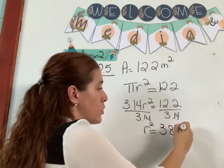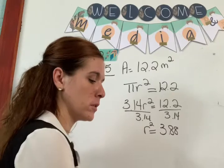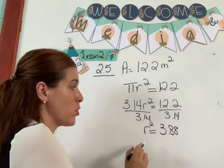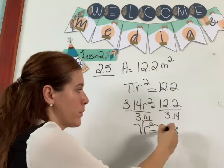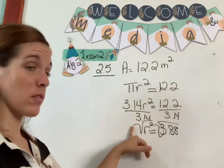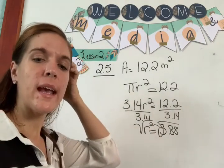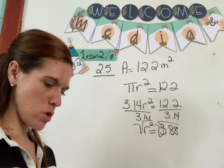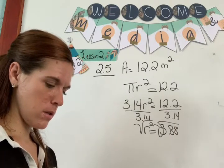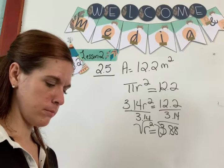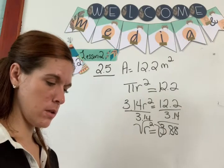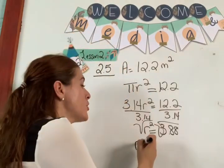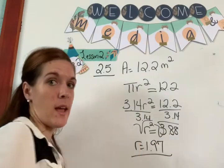So now we have r squared equals 3.88. How do you get r by itself? You do the opposite of squaring, which is the square root. The square root of 3.88 is 1.97. So your radius is 1.97. But that's not the circumference.